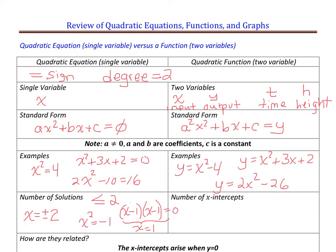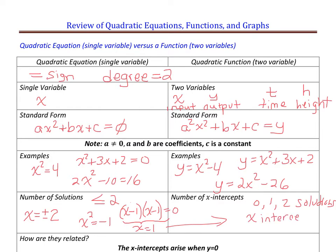Most quadratics have two solutions, and some will have zero solutions. These solutions relate to quadratic functions as the x-intercepts. When we replace y with zero, y is zero everywhere on the x-axis. So we can have zero, one, or two x-intercepts. There are cases where a parabola does not intersect the x-axis, which results in zero x-intercepts and zero solutions.